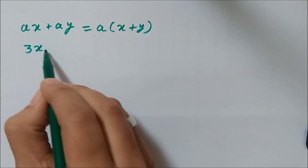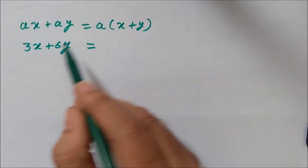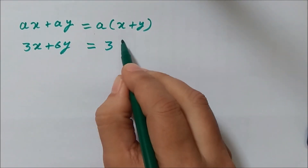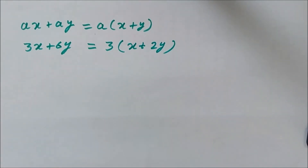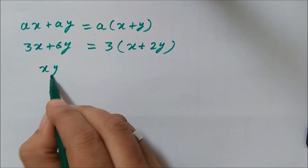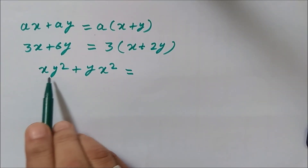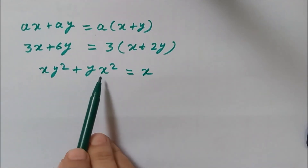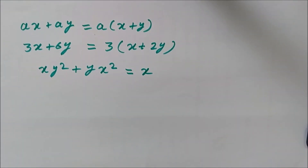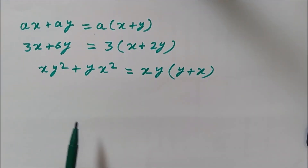Another example: 3x plus 6y. Here the common factor is 3, since 6 equals 2 into 3. So we take 3 out and it becomes 3 into x plus 2y. Or take a slightly more involved example: xy squared plus yx squared. Here the common factor is xy, since the lowest index of x is 1 and the lowest index of y is 1. Taking out xy gives xy into y plus x. That is how we can use the method of common factors to factorize simple expressions.